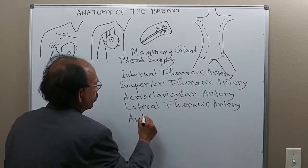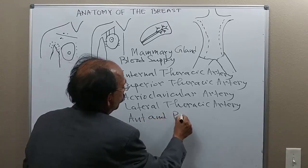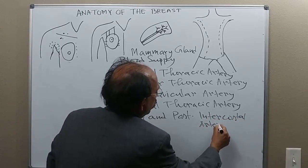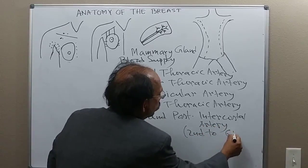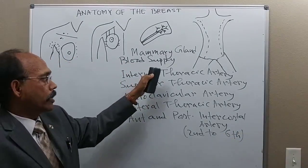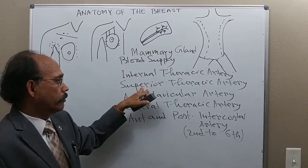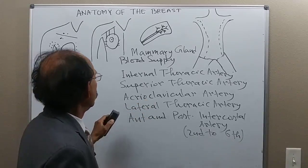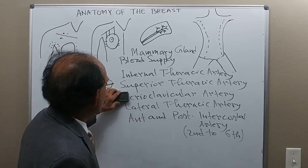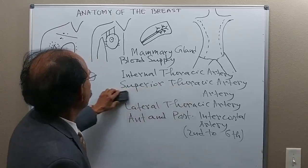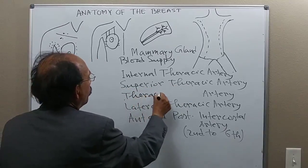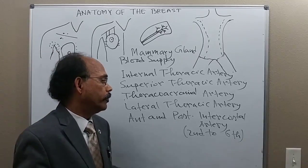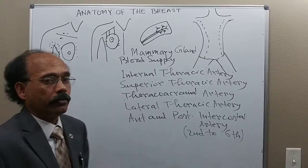Additional blood supply comes from the anterior and posterior intercostal arteries, second to sixth. The venous drainage is similar to the arterial supply — via the internal thoracic vein, the anterior and posterior intercostal veins, and the axillary veins. The posterior intercostal vein drains to the veins inside the thoracic vertebral body, which has clinical importance.